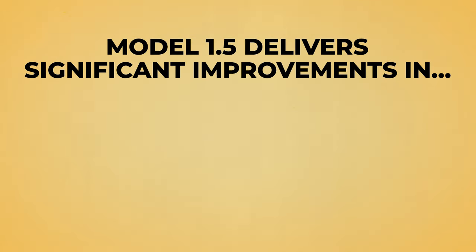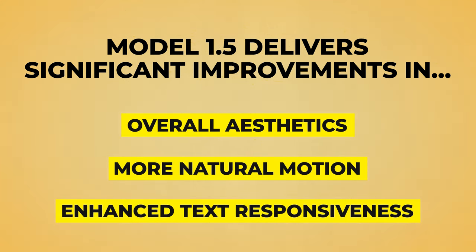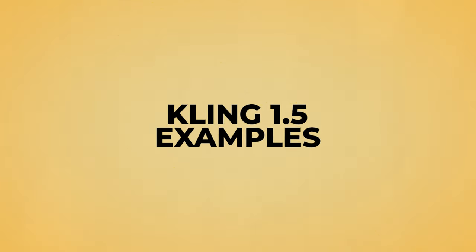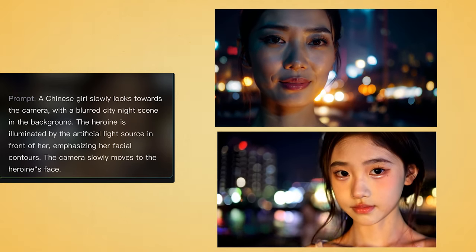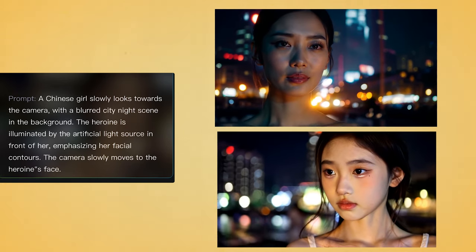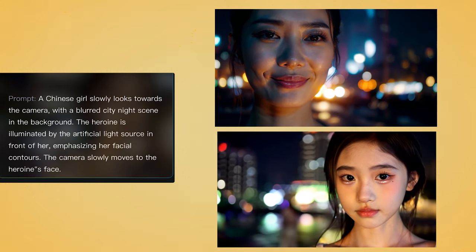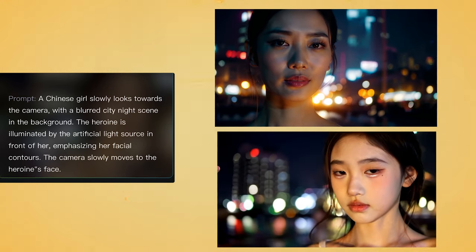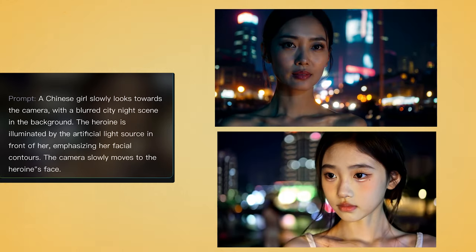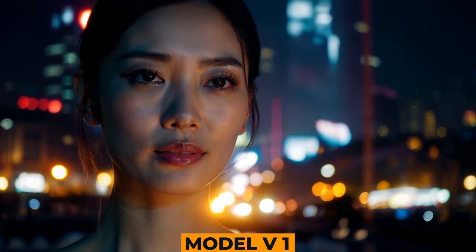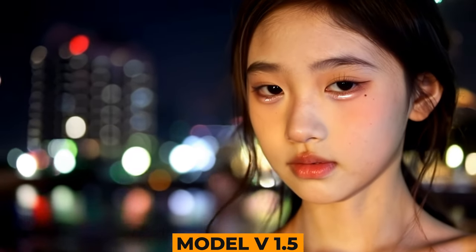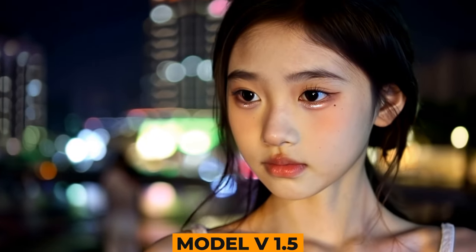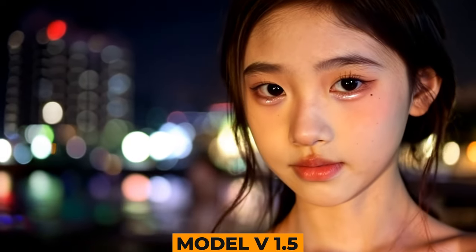Kling states that model 1.5 delivers significant improvements in overall aesthetics, more natural motion, and enhanced text responsiveness. Here we have a few examples from Kling. For this example, they've used a prompt of a Chinese girl slowly looking towards the camera, with a blurred city night scene in the background. The heroine is illuminated by an artificial light source in front of her, emphasising her facial contours, and the camera slowly moves to her face. They both look really good — I'm not noticing a huge difference, but there is a definite resolution upgrade in 1.5 as it's 1080p, whereas Kling 1.0 is 720p.